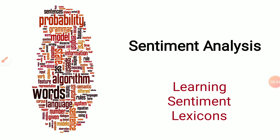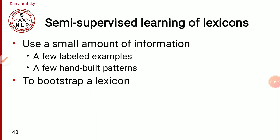Welcome back students in the video lecture series of NLP. In the last video lecture we have seen some of the existing lexicons, their size, and the category of the words. In this video lecture we will see how we can build our own lexicon for sentiment analysis. One of the popular methods for building a lexicon is semi-supervised learning. In semi-supervised learning we have a small amount of labeled data, such as a few labeled examples or hand-built patterns, and using this labeled data we can build a full-fledged lexicon using the bootstrap lexicon method.